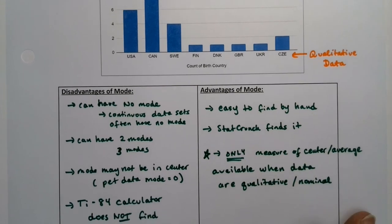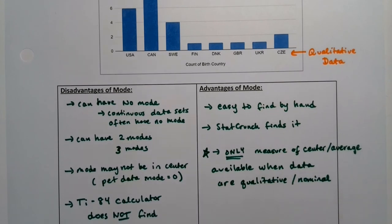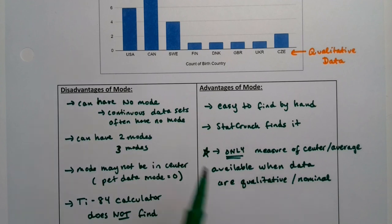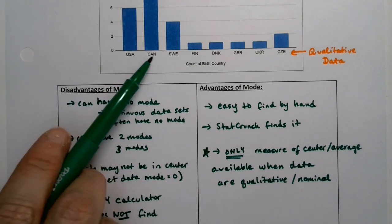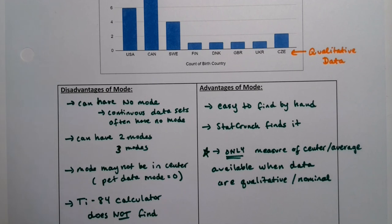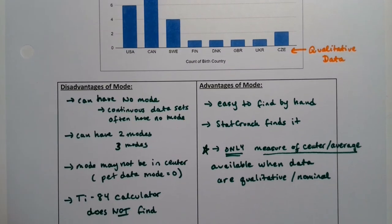If they're words, you don't have any choice. You can't find the median of words. You can't find the mean of words. It's not like we can add these up and divide. It doesn't work like that. The only measure of center average that we have available to us is mode. Canada. That's it.